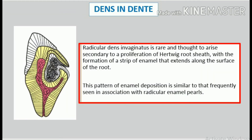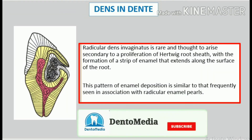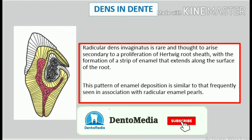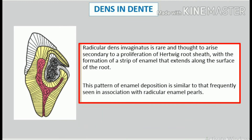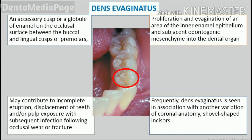Radicular dens invaginatus is rare and thought to arise secondary to a proliferation of Hertwig's root sheath, with the formation of a strip of enamel that extends along the surface of the root. This pattern of enamel deposition is similar to that frequently seen in association with radicular enamel pearls, dens invaginatus.